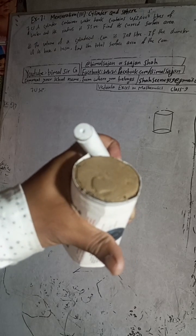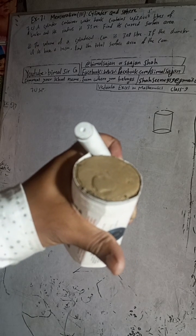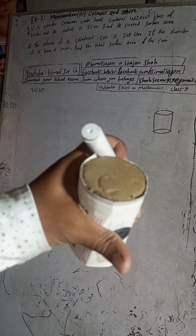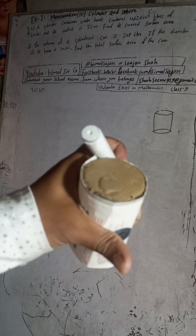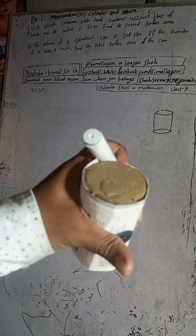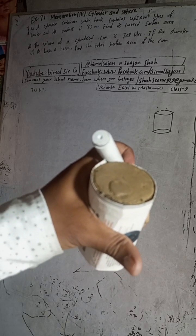Hi class 9 and 10 students, welcome back to Bimalsarji YouTube channel. This is question number 7c, exercise 7.1, mensuration third part: cylinder and sphere. Vedanth Excel in Mathematics class 9.